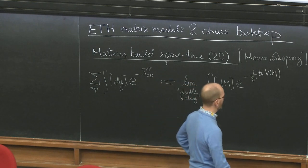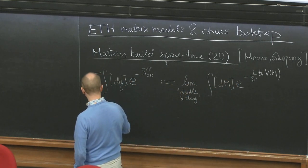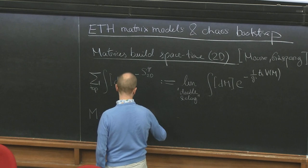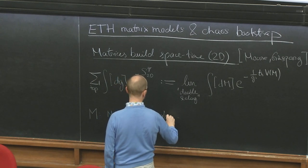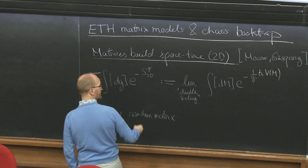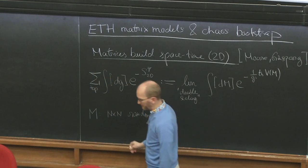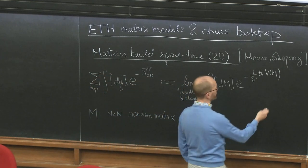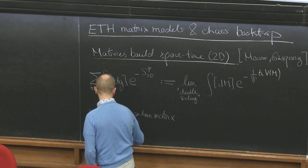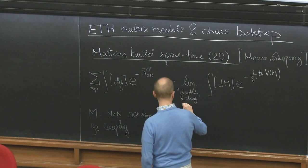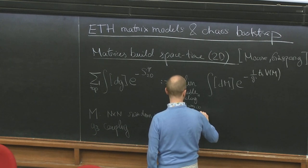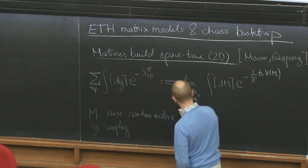So M would be an N-by-N random matrix, random in the sense that I've specified a distribution of matrices from which I'm sampling. There are coupling parameters — for example a cubic coupling G3. This double scaling limit takes N, the size of the matrix, to infinity, while simultaneously scaling some appropriate coupling to a critical value.